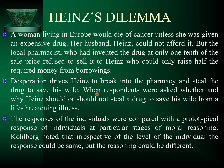He wants to save his wife. When respondents were asked whether and why Heinz should or should not steal the drug to save his wife from a life-threatening illness, the responses were compared with the prototypical response of individuals at particular stages of moral reasoning. Kohlberg noted that irrespective of the level of the individual, the response could be the same but the reasoning could be different. This is Heinz's dilemma.